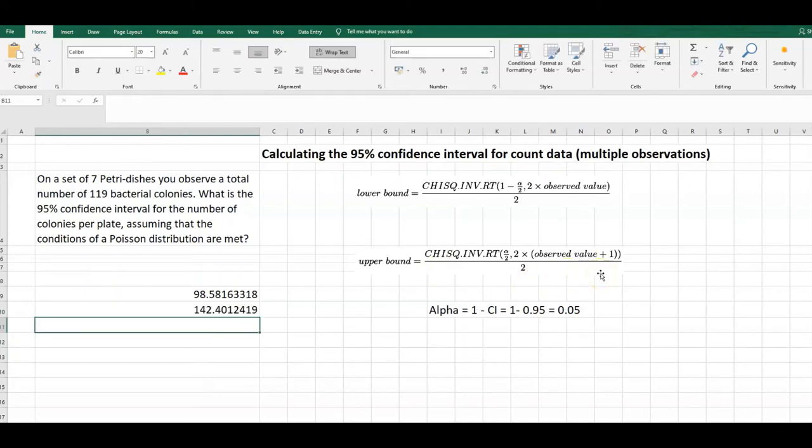That gives us 142.4. Now this is the confidence interval for the total number of colonies, but we've got them distributed over seven petri dishes. So to find the confidence bound for a single dish, all we need to do is take this value and divide it by seven.